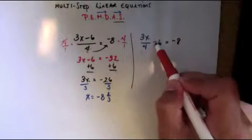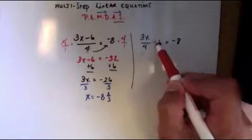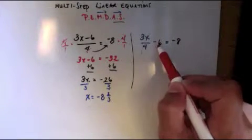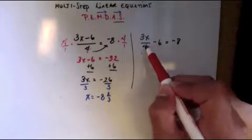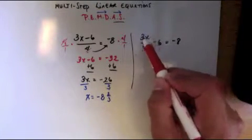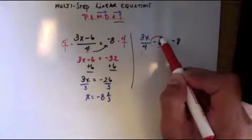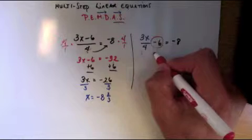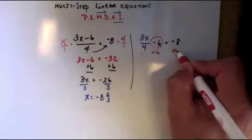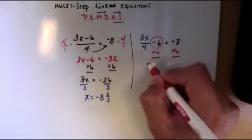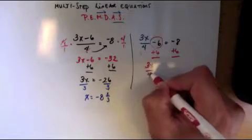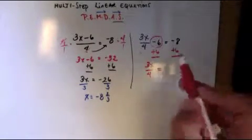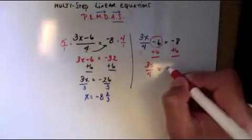So now this is actually an addition/subtraction problem. Before we take care of the division, I have to take care of this guy here first, because this is separate from the 3x over 4. So here I will do plus 6, and I will be left with 3x divided by 4. Negative 8 plus 6 is negative 2.